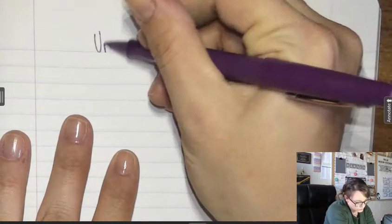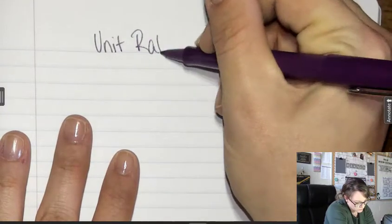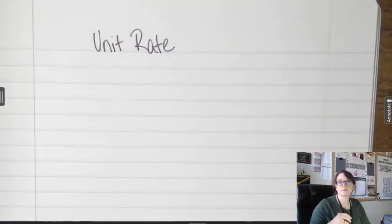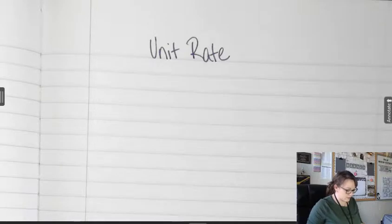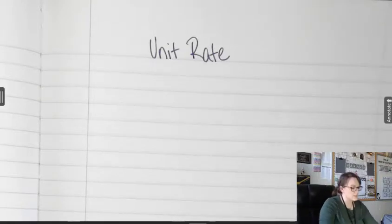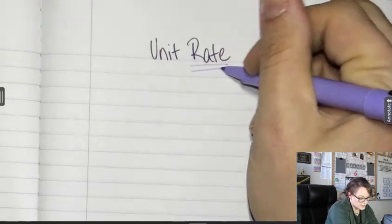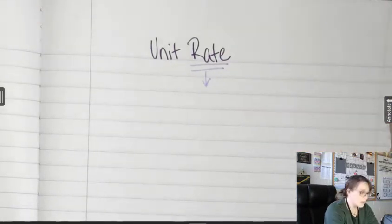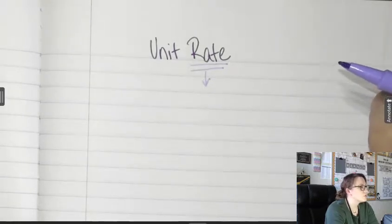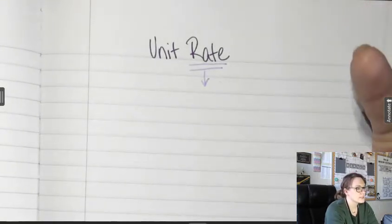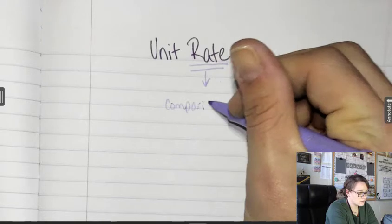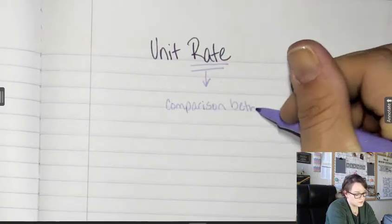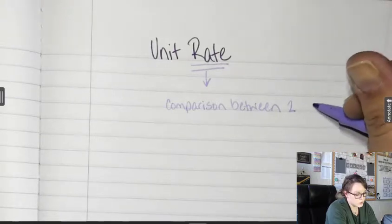Unit rate. As with all things, we need to understand the vocabulary before we can do anything else. The term rate is generally a comparison between two separate values, two separate things. Comparison between two values.